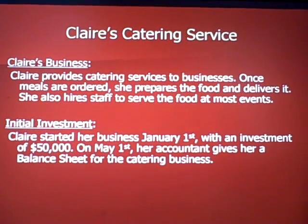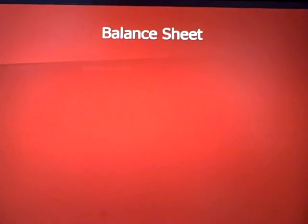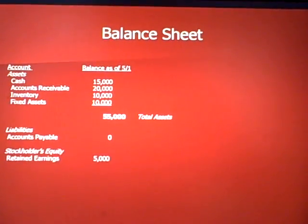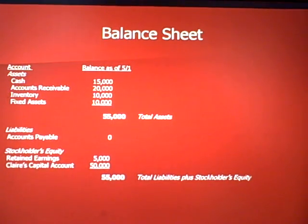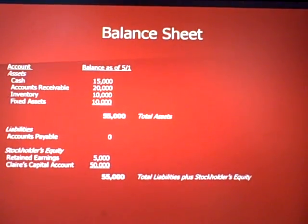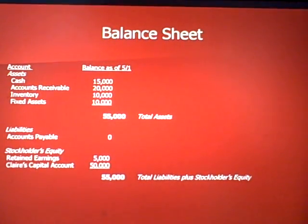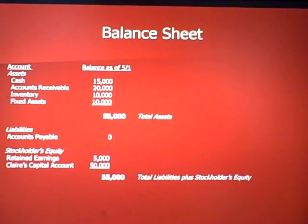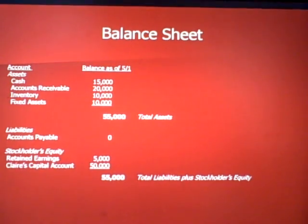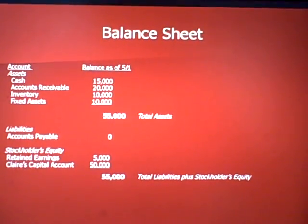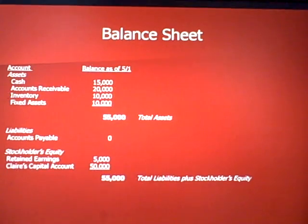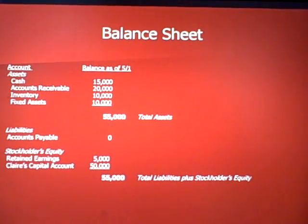On May 1st, her accountant gives her a balance sheet for the catering business so she can see where she is financially. Here is that balance sheet. You can see in italics a group of line items called assets, liabilities, and stockholders' equity, and at the bottom of the page Claire's capital account, which represents the capital she invested in the business. This is a standard balance sheet that you might see.